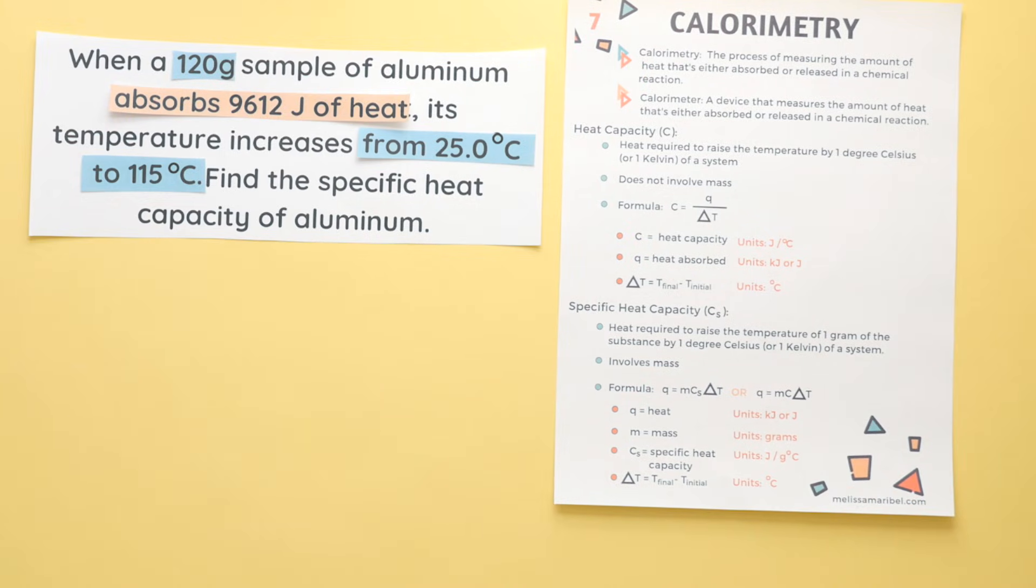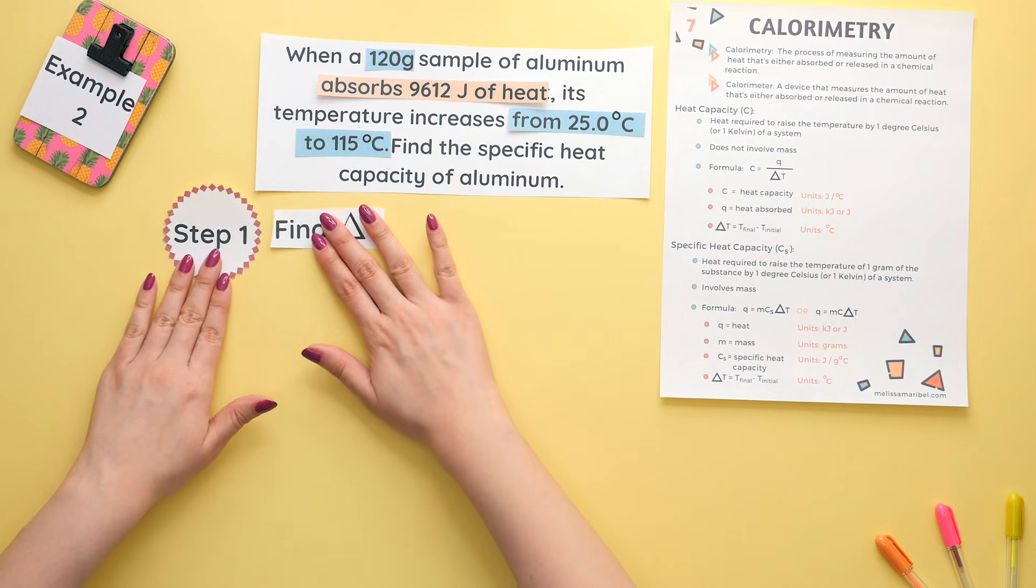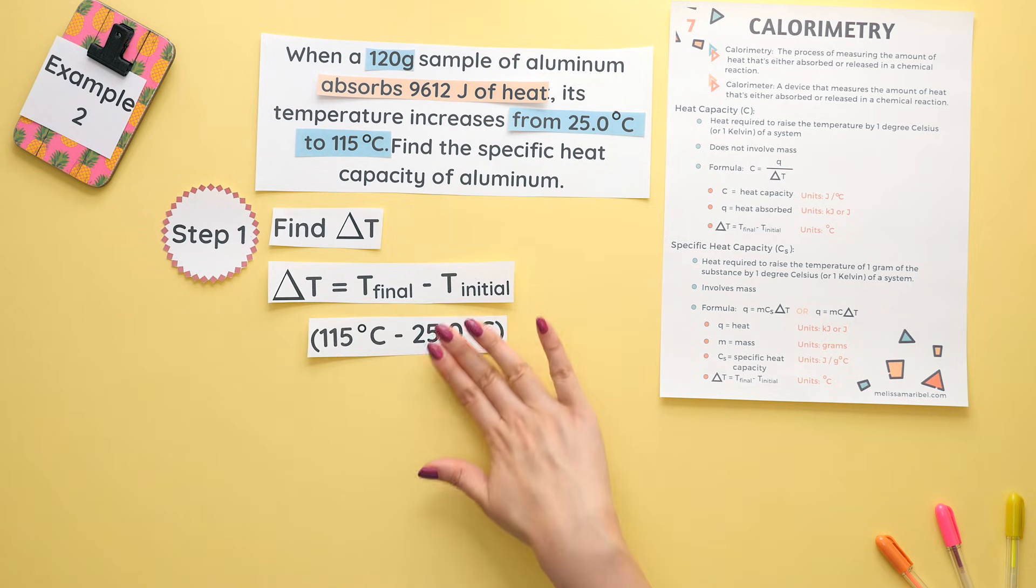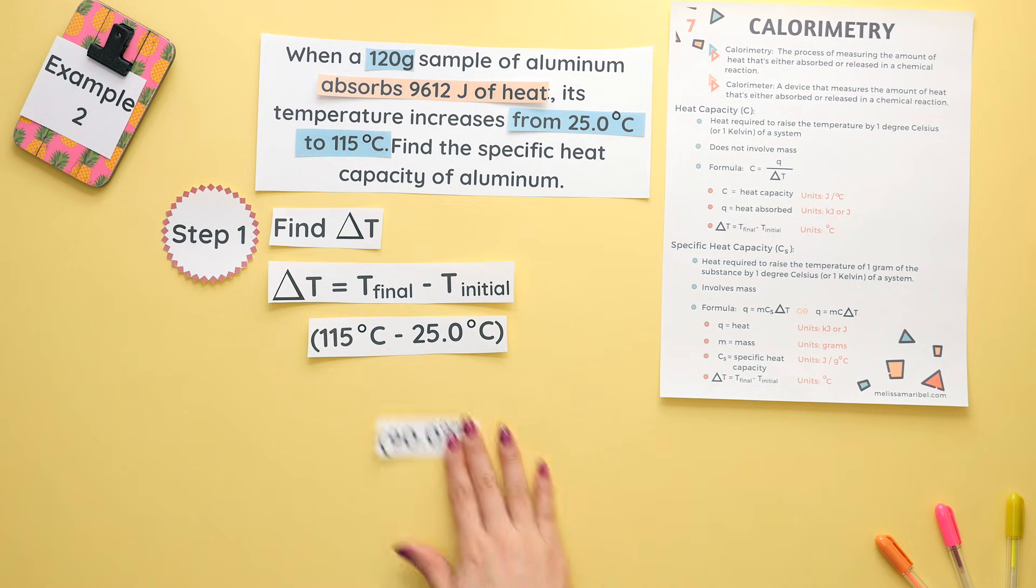Since everything is in its proper unit, we will start with step 1, which is to find our change in temperature. Final minus initial gives us 90 degrees Celsius.